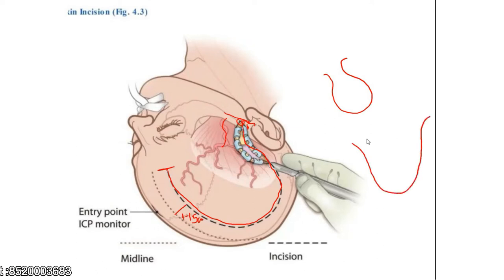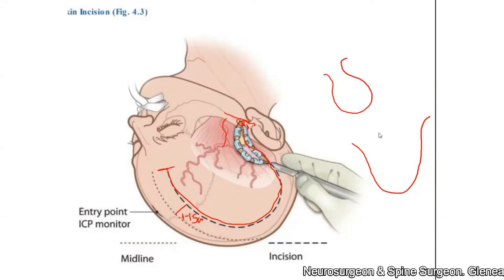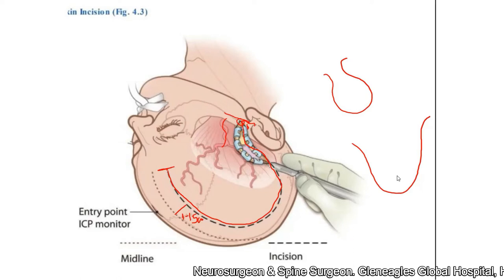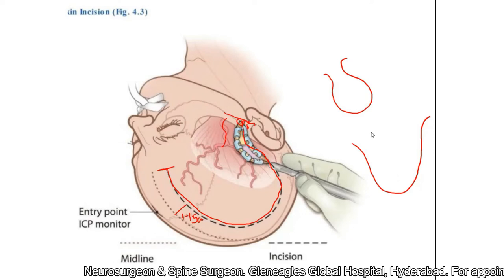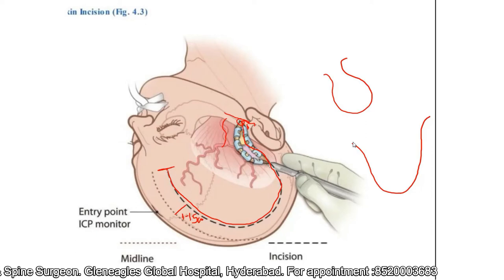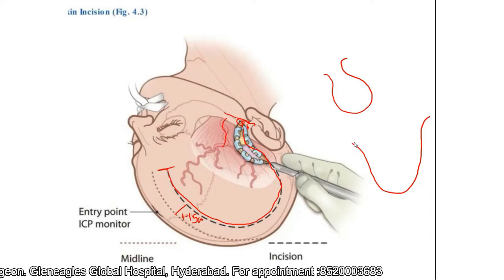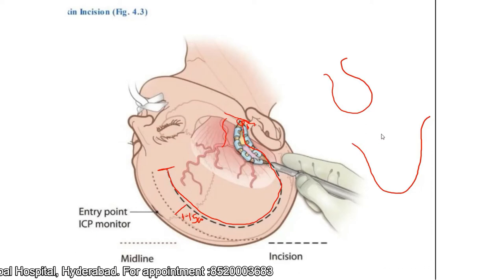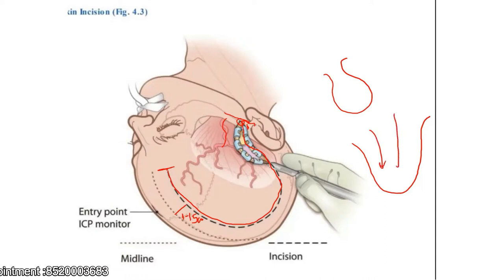If possible, we will try to ensure that the base of the flap is at least equal to the length of the flap, but that may not always be possible. We try to keep the flap as wide as possible. This ensures that there is sufficient vascularity reaching the flap so that there is no necrosis.